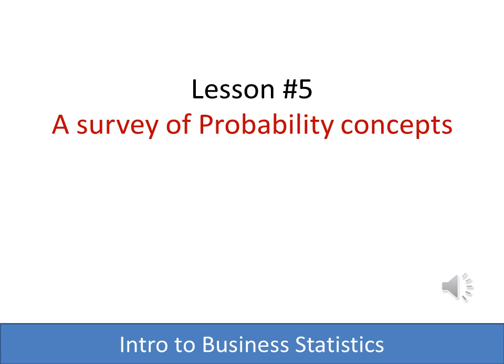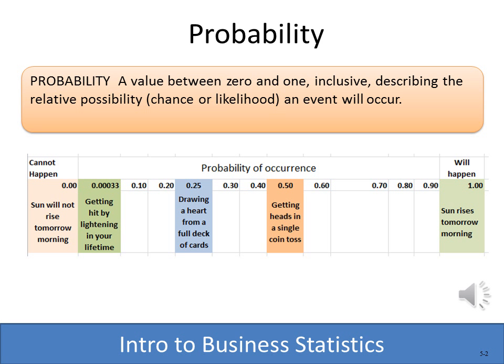This lesson introduces us to the concept of probability. Probability is simply the likelihood of something occurring, and it can range from zero to one.